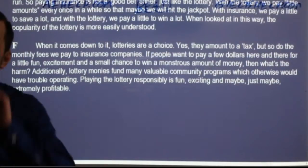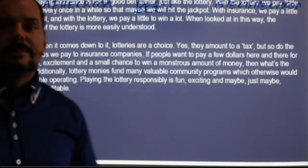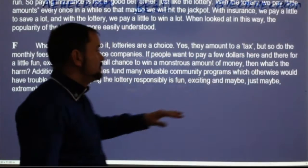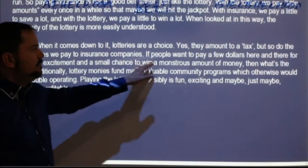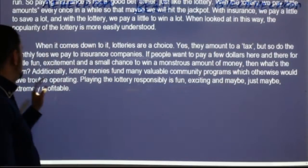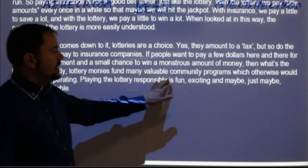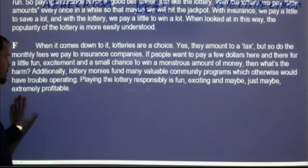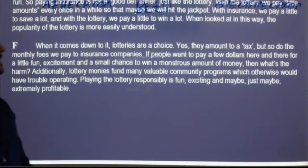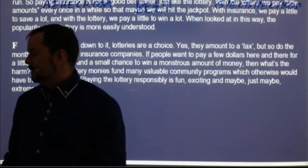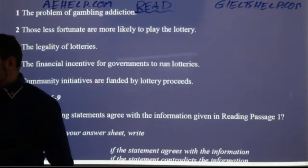Paragraph F — the conclusion: 'When it comes down to it, lotteries are a choice. Yes, they amount to a tax, but so do monthly fees we pay to insurance companies. If people want to pay a few dollars for fun, excitement, and a small chance to win a monstrous amount of money — then what's the harm? Additionally, lottery monies fund many valuable community programs which otherwise would have trouble operating. Playing the lottery responsibly is fun, exciting, and maybe just maybe extremely profitable.' The conclusion is about why lotteries exist: to fund community programs, to have fun, and maybe win a lot.